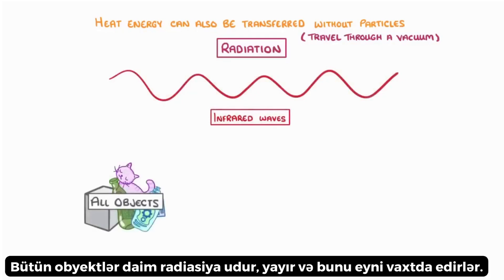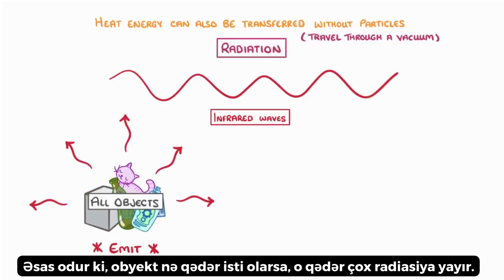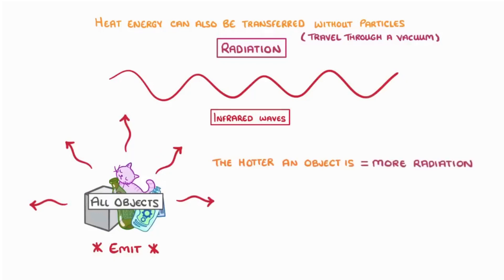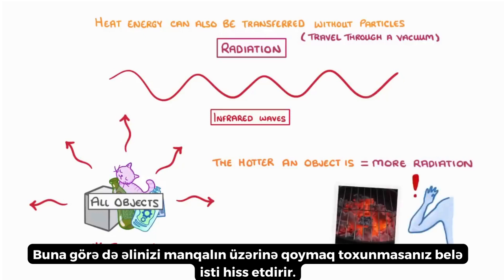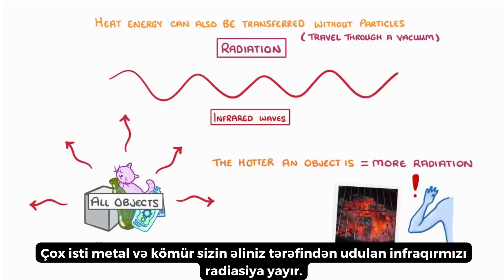All objects constantly absorb and emit radiation, and in reality they do both at the same time. Importantly, the hotter the object is, the more radiation it emits. This is why it feels hot to put your hand over a barbecue, even if you're not touching it — the very hot metal and coal is emitting infrared radiation, which is absorbed by your hand.